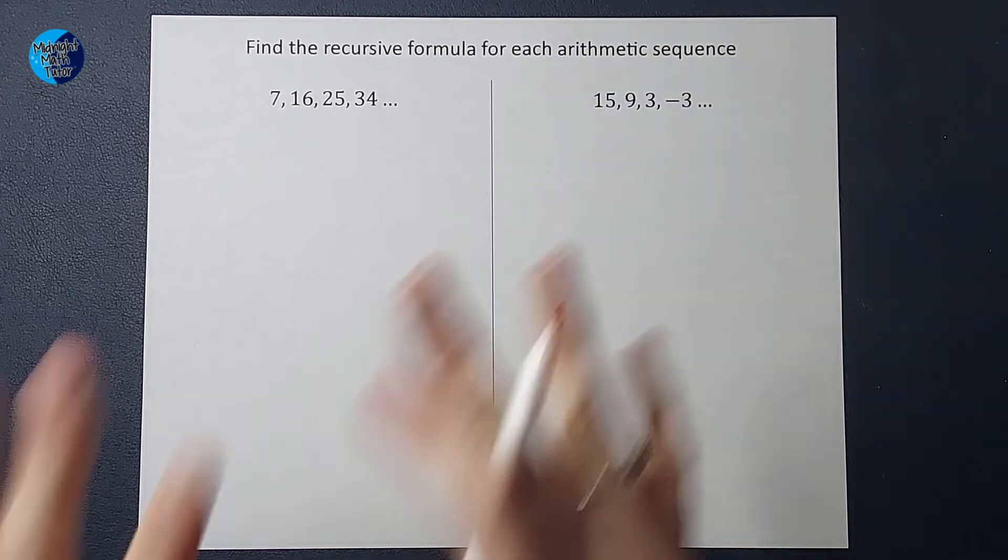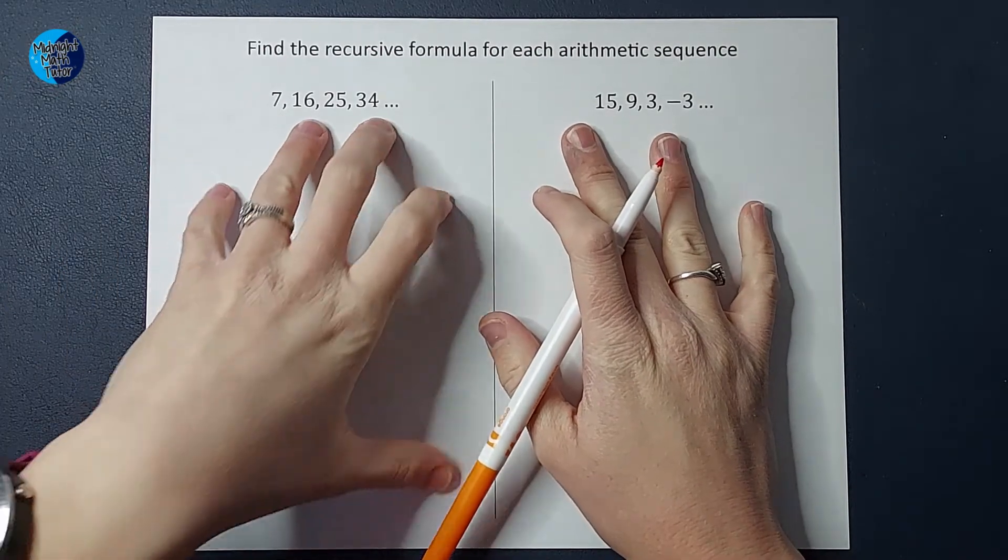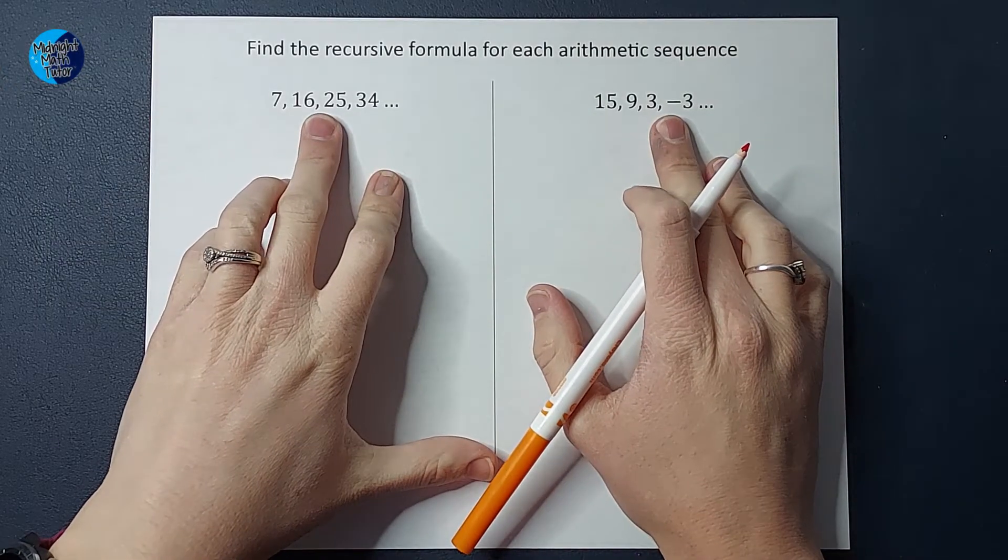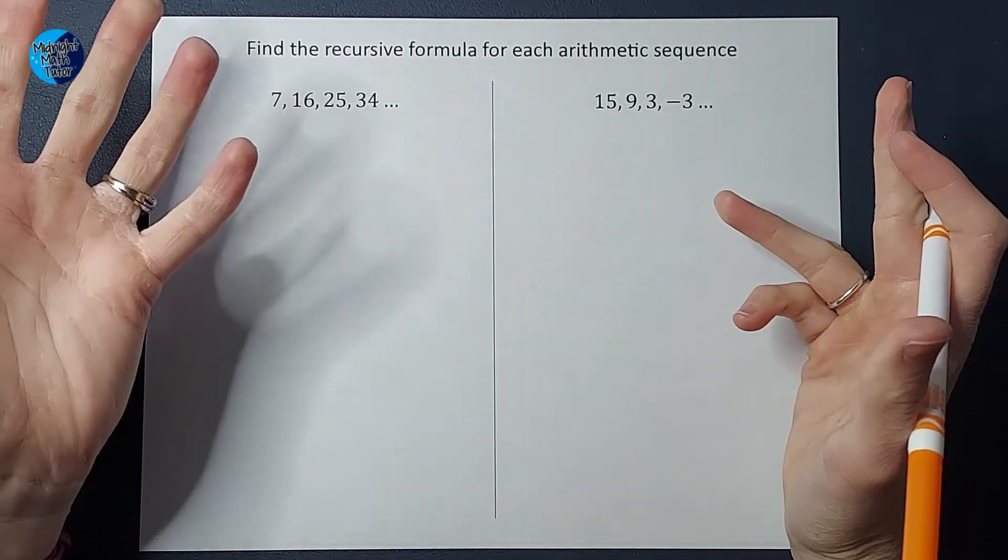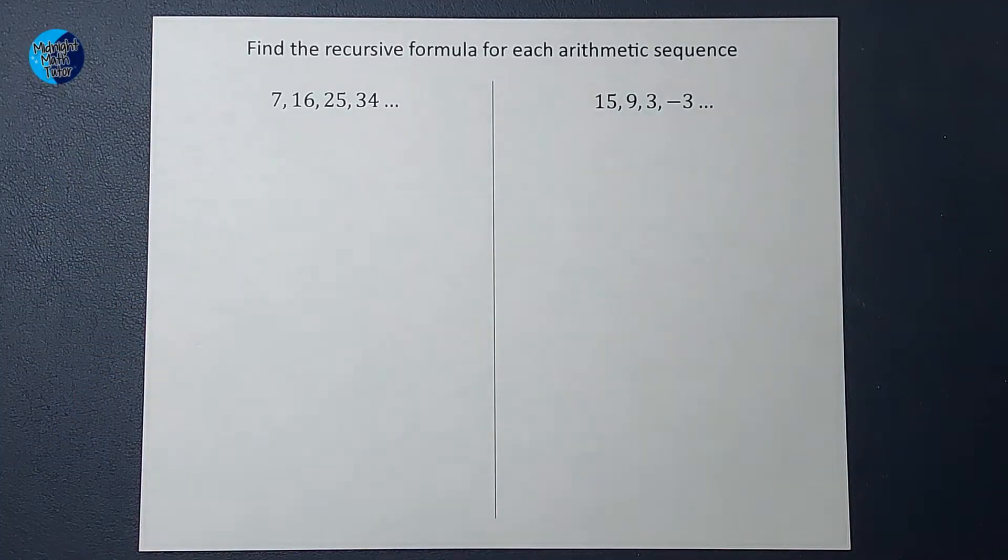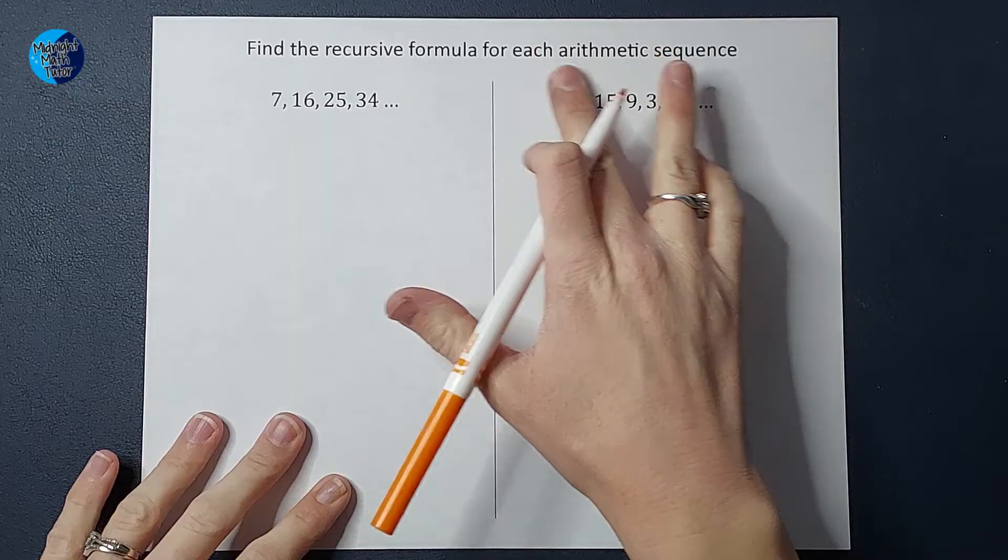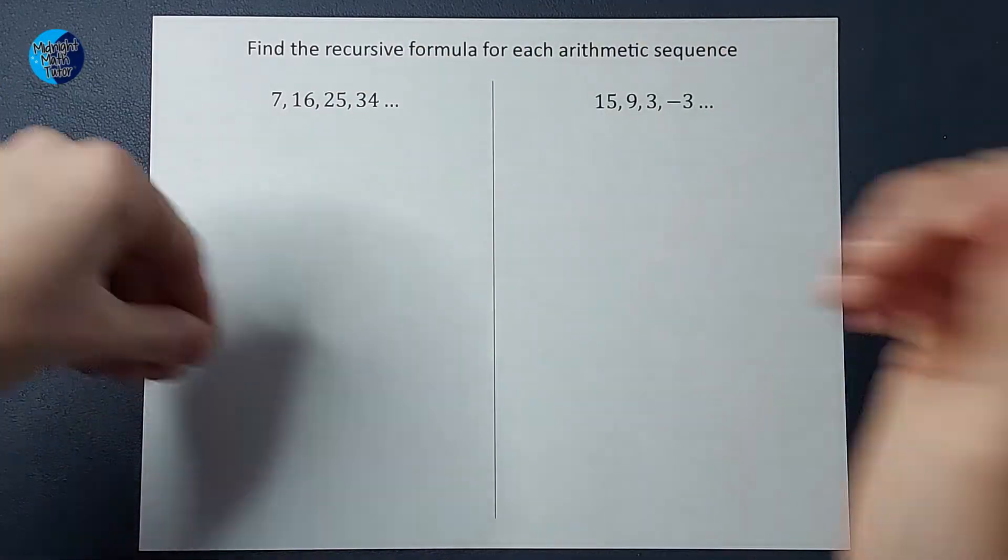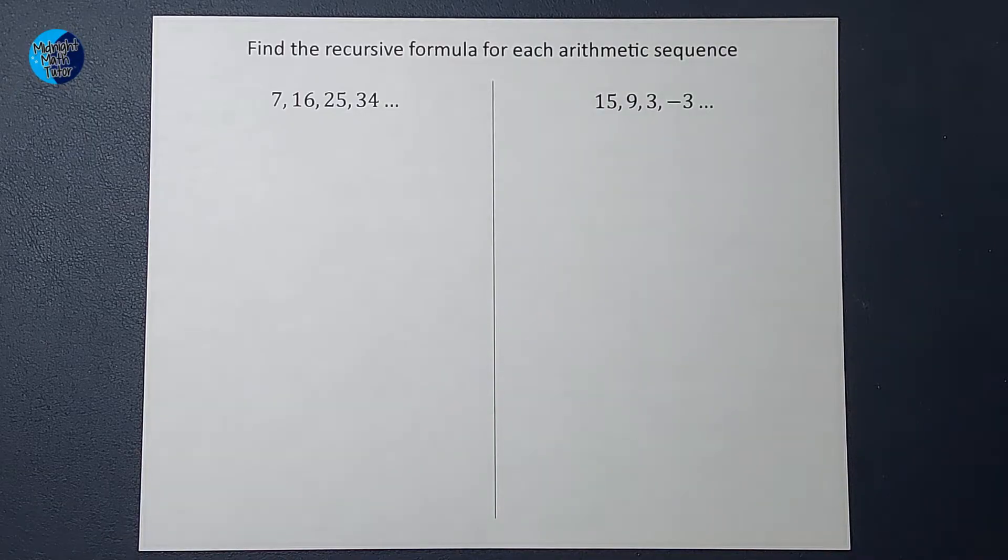Hey you guys, we are working on some recursive formulas today for these arithmetic sequences. What makes these sequences and not just a random list of numbers? Well, it is that these numbers are related to each other in some way. Because I know it's arithmetic, I might be adding the same number over and over or subtracting the same number over and over. They're related, not just randomly listed.